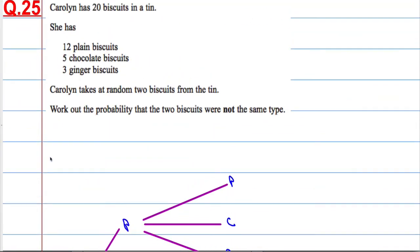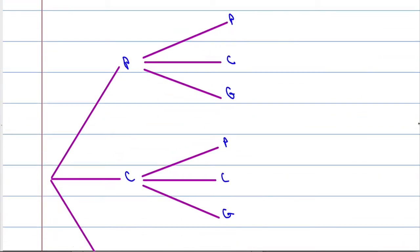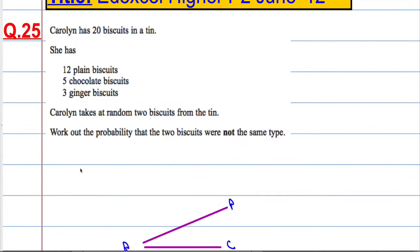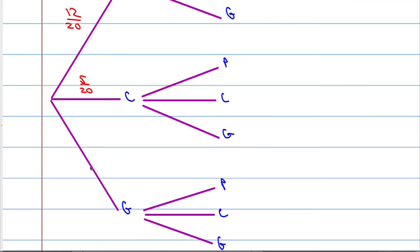Now, we've got 12 plain biscuits out of 20 biscuits in total. So the probability that she chooses a plain biscuit on the first pick is 12 out of 20. The probability that she chooses a chocolate biscuit is 5 out of 20. And the probability that she chooses a ginger biscuit is 3 out of 20.